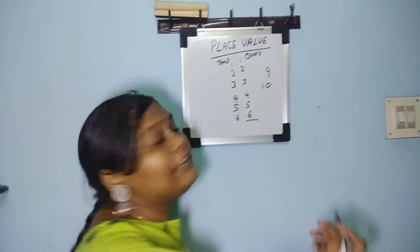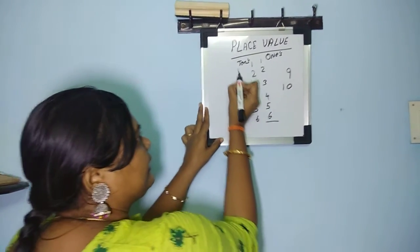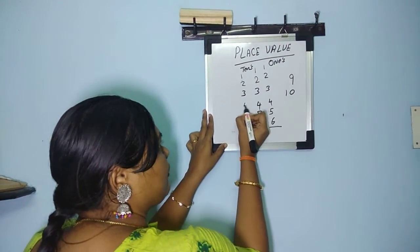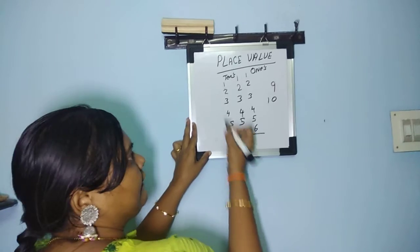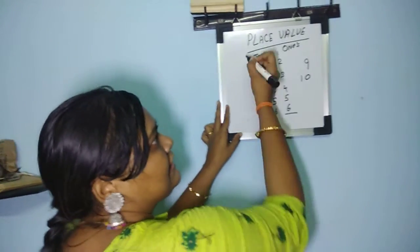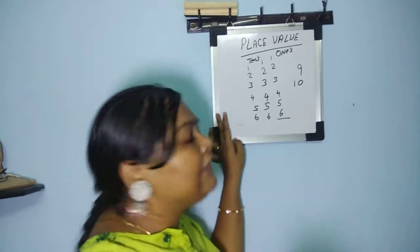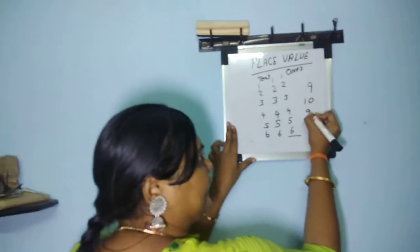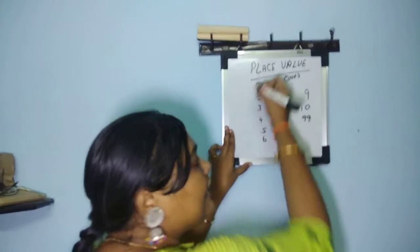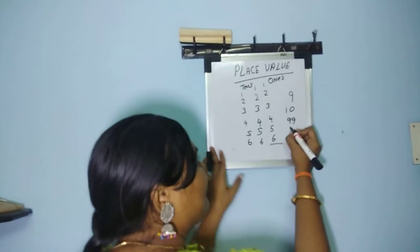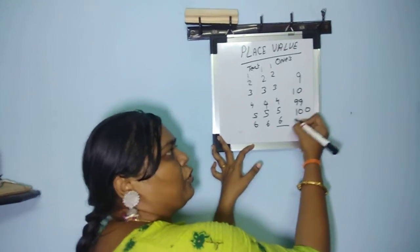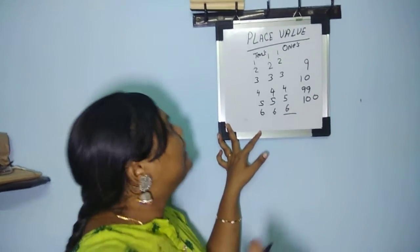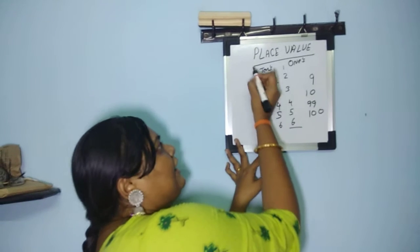So when it comes to the hundreds value, I will just write it here: 1, 2, 3, 4, 5, 6. When it comes to the hundreds, say then the 2 digit will finish by 99, and the 3 digit will start by 100. That is 100, so it is called as hundreds.